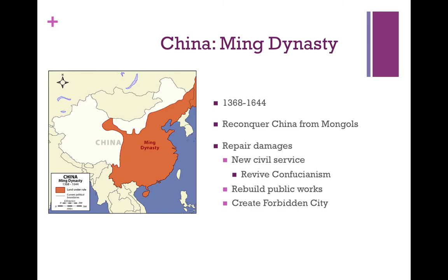They also create a new civil service system — it's not brand new, it's just bringing back what the Song and the Tang did that was effective and getting rid of what the Yuan did. To do this, they revive Confucianism, which they do readily and willfully, and the people like it. They create a new city within the capital city of Beijing called the Forbidden City, where the emperor lives and the bureaucracy is centered.